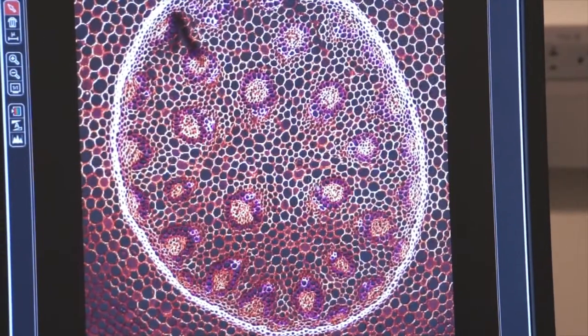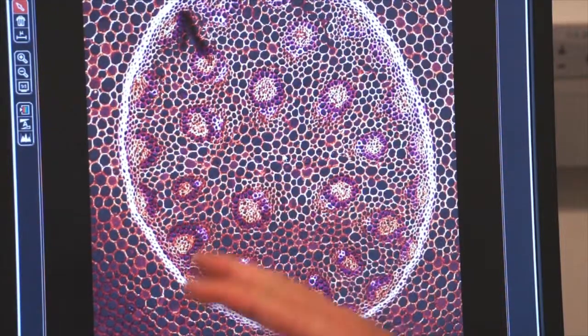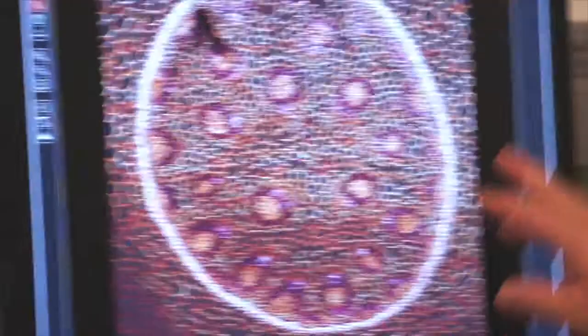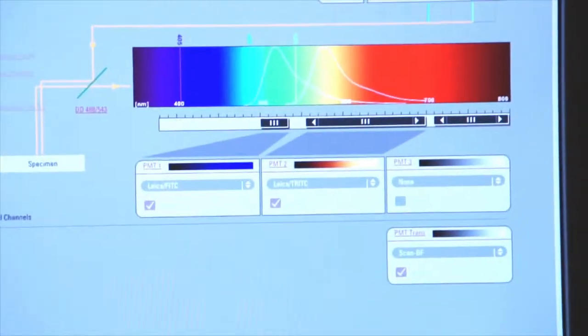Now you can see that my composite image is a lot different. So by changing the colors of the output of my photo multiplier tube, I can accentuate regions of interest on my image that I want to show in different colors.